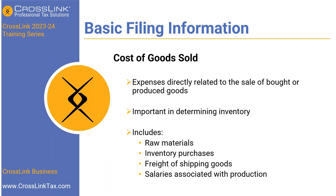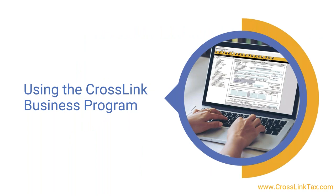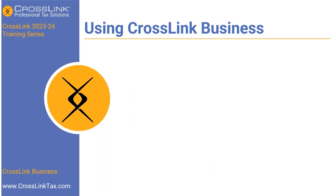Now that we've covered what kinds of business returns can be done using the Crosslink business platform and some accounting basics, the next piece we really want to delve into is using the Crosslink Business Program itself. When working within the 1065 partnership type of return, we'll toggle into the program in just a moment to show the different kinds, but let's talk about the areas you'd be responsible for completing when doing a particular return.